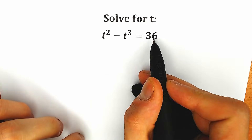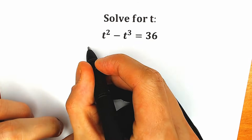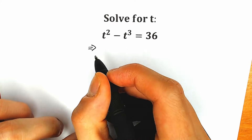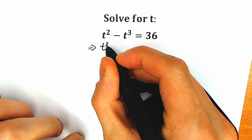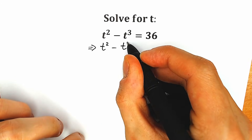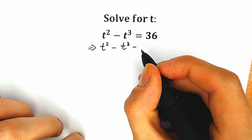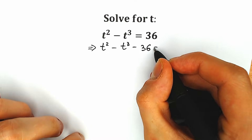First of all, let's write the 36 on the left side. So we have t squared minus t cubed, and minus 36, equal to zero.